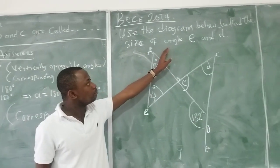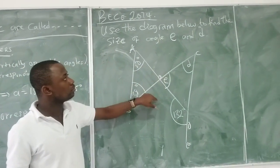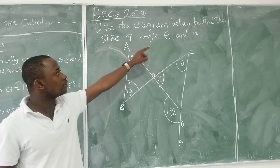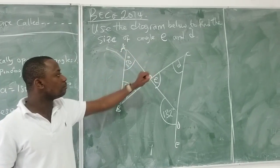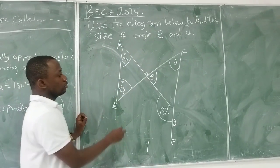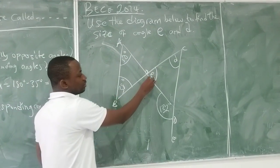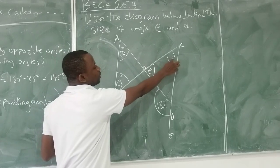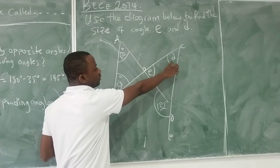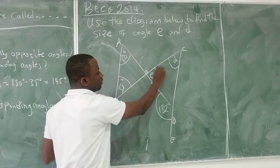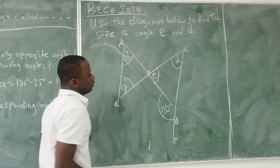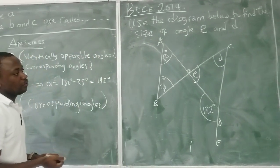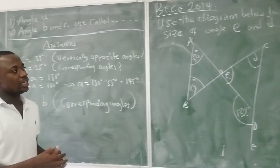View the diagram below to find the size of angle E and D. From the diagram, this is the size labeled E, and that is D.